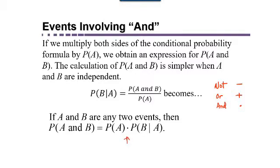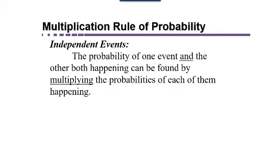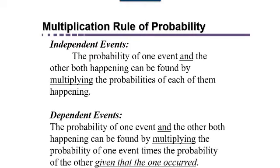Now if A and B happen to be independent, realize that the probability of B given that A has occurred would just be the probability of B. So you would just be multiplying the probability of A times the probability of B if the two events are independent. Again, for independent events the probability of one event and the other both happening can be found by multiplying the probabilities of each. If you have dependent events then you have to multiply the probability of one by the probability of the other given that the first has occurred.